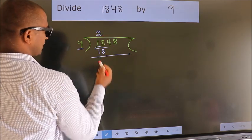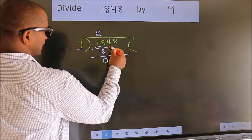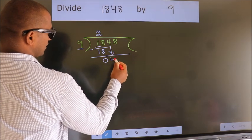Now we should subtract. We get 0. After this, bring down the next number. So 4 down.